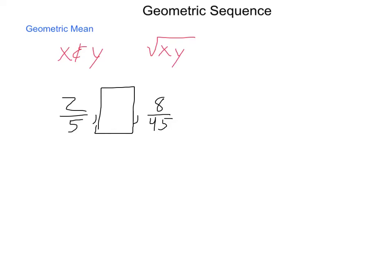In order to find the square root of this, or find the missing value, the geometric mean, I'm going to abbreviate gm of 2 fifths and 8 forty-fifths is equal to the square root of their product. So 2 fifths times 8 forty-fifths. Now, simplifying, 2 times 8 is 16. 5 times 45 is 225.